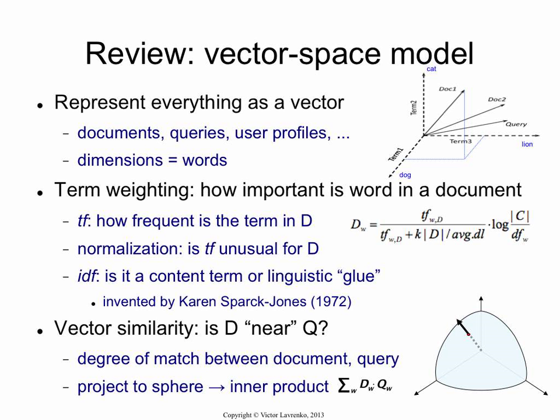We're going to do this in the context of the vector space model. As a refresh, we're representing everything in terms of vectors in some high-dimensional space. The dimensions of the space are going to be individual terms in our vocabulary. We're going to use TF-IDF weights as weights for words in both the document and the query. And when we match documents to queries, we are basically asking: are you similar in this vector space? How far away are you in this vector space?